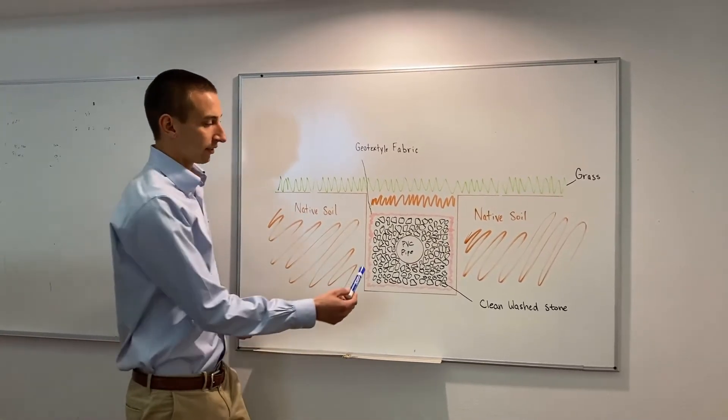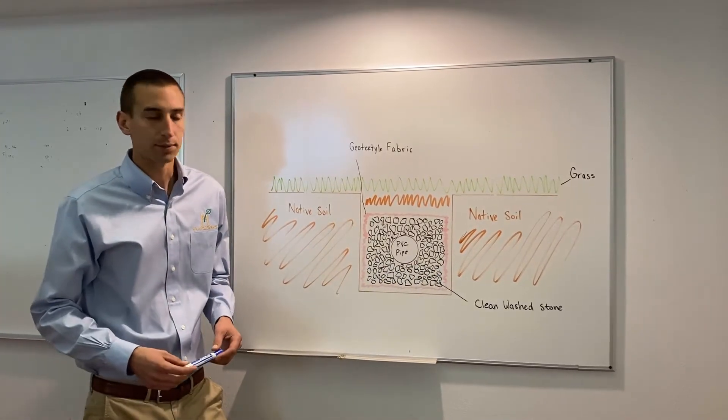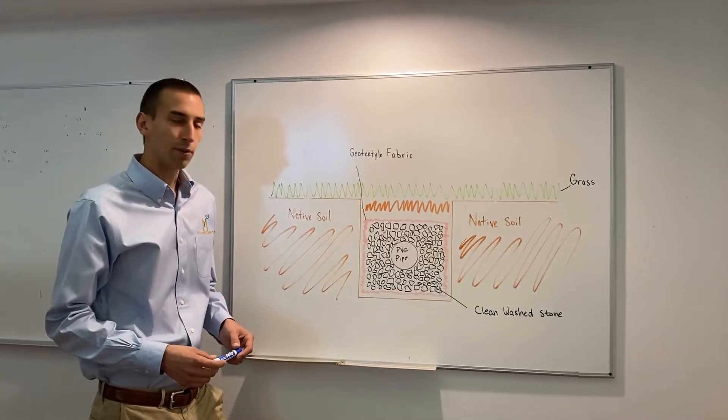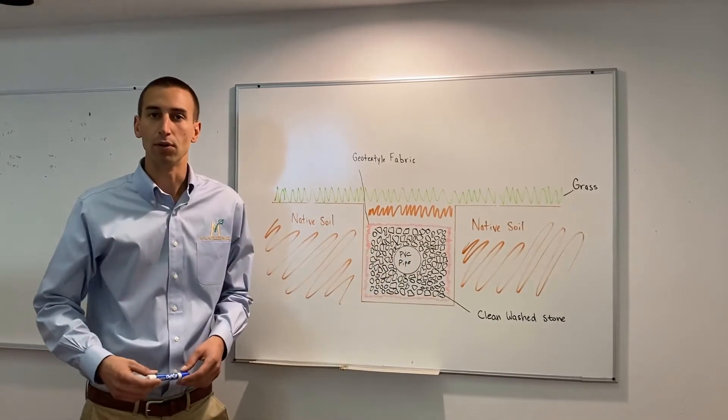After the geotextile fabric is laid, we will then add clean washed gravel to the bottom of the trench. Following that, we will then put PVC pipe that is perforated with holes in the bottom.